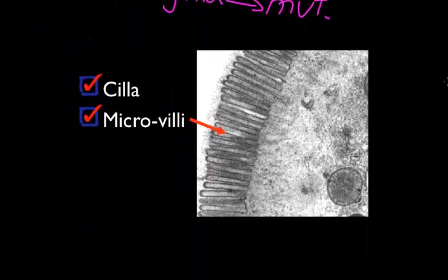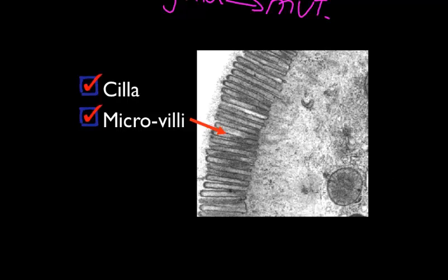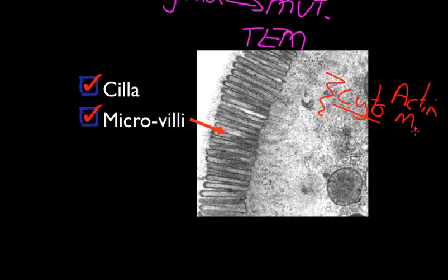Here we have microvilli. Let's get orientated on this picture first. This is a transmission electron micrograph, so that means it's a very thin section of the boundary of a cell. Here we can see the cytoplasm. Remember, cytoplasm is not just water — it has many filaments within it: actin filaments, microtubule filaments, all sorts of filaments that act to give a cell its shape, structure, and to hold organelles in place. And here, this is actually a cross-section of a mitochondria sitting in the corner.